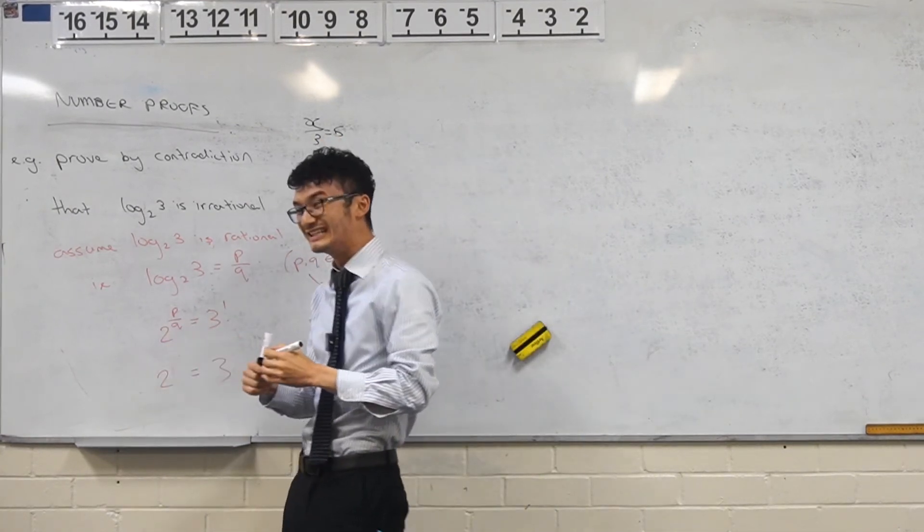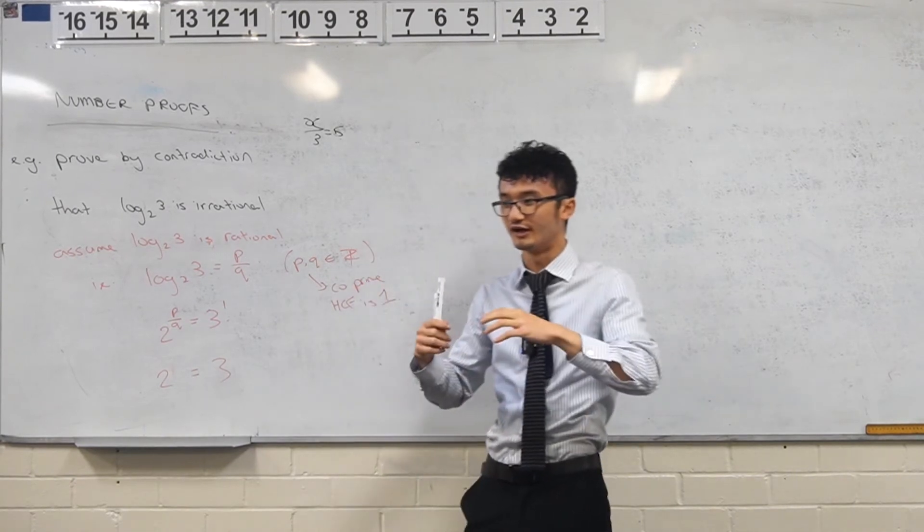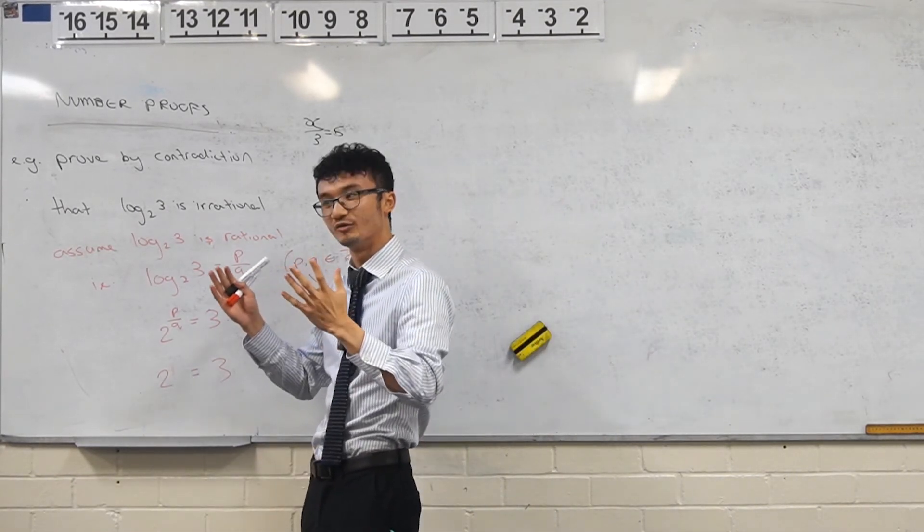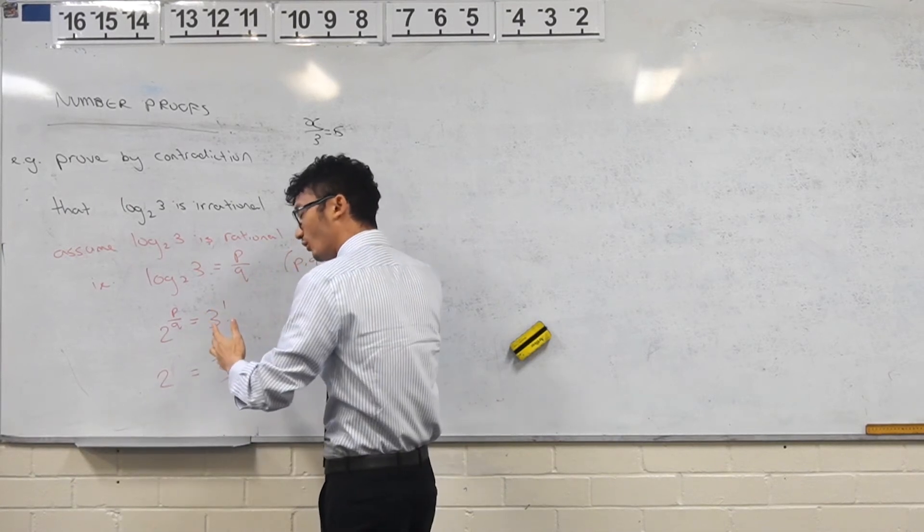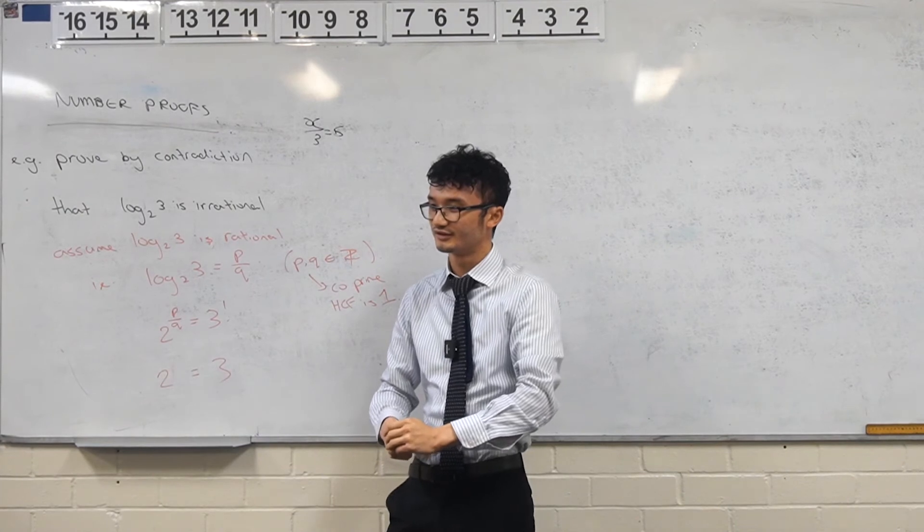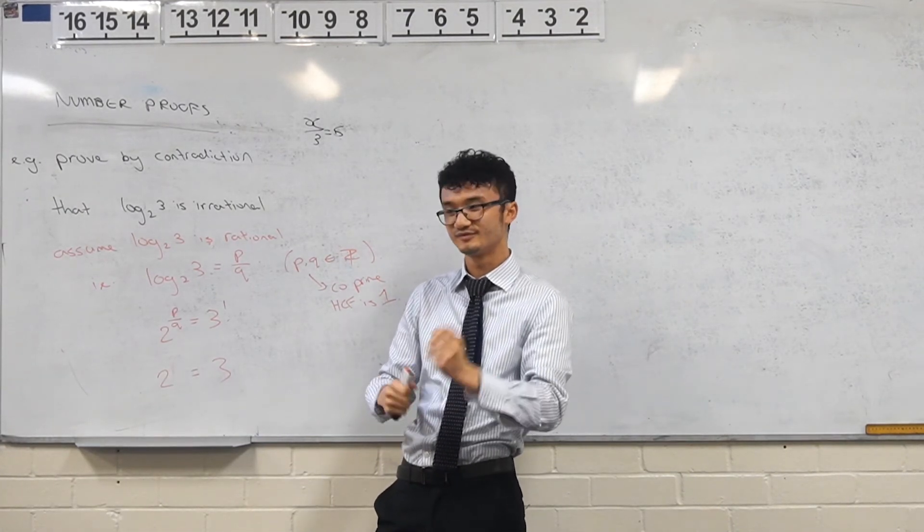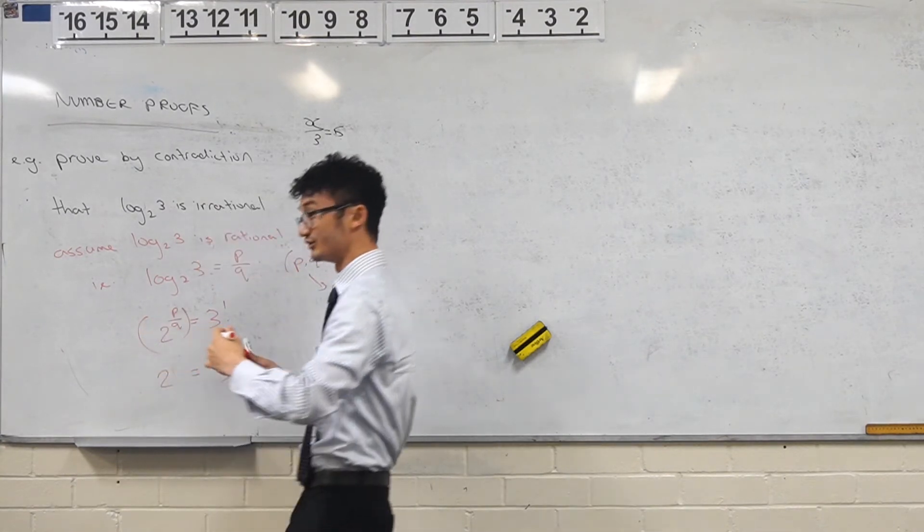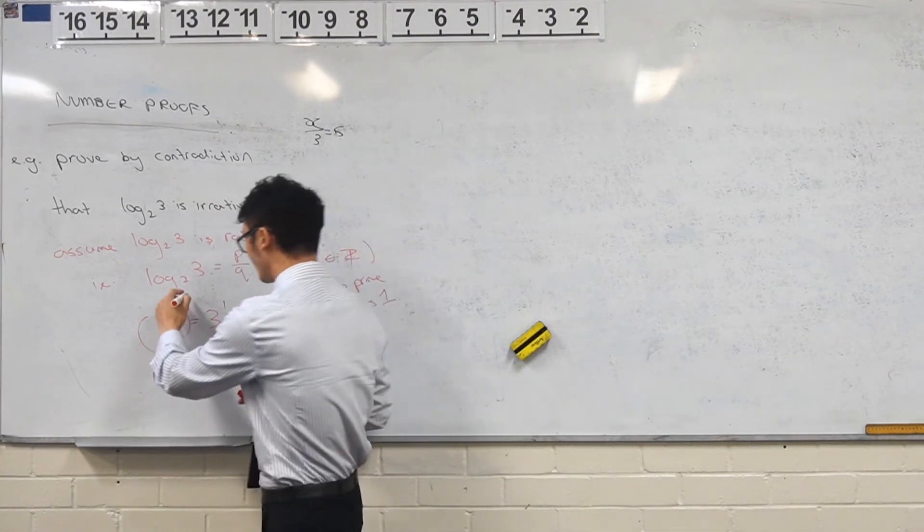We can actually do something here. If you think about your index laws, right? How can I multiply the index by what's on the denominator? Right. Well, when do you multiply indices together? When they're just power and power, right? So what you do, what I can do is like a little algebraic trick. The power of q.